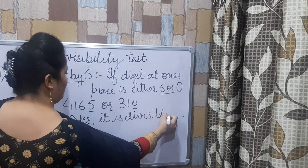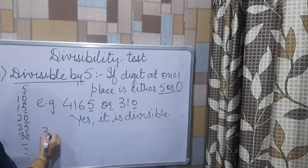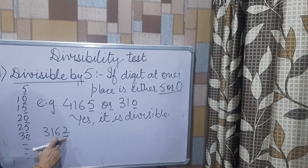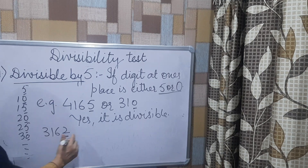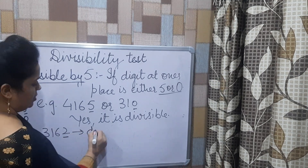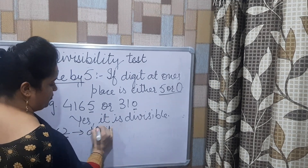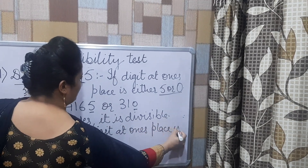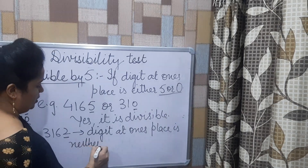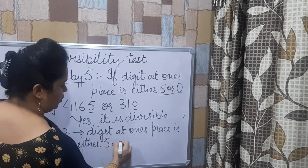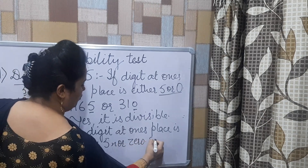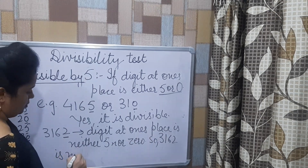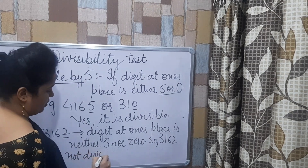Suppose if you have the number 3,162. Here the number ends with 2, meaning the digit at the 1's place is 2, which is neither 5 nor 0. So 3,162 is not divisible by 5.